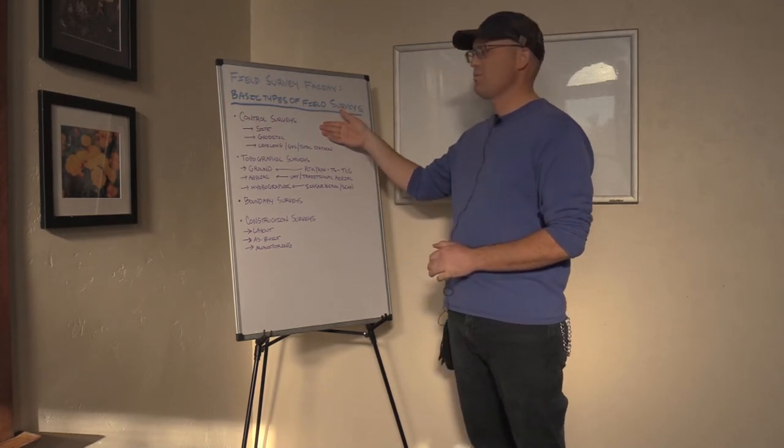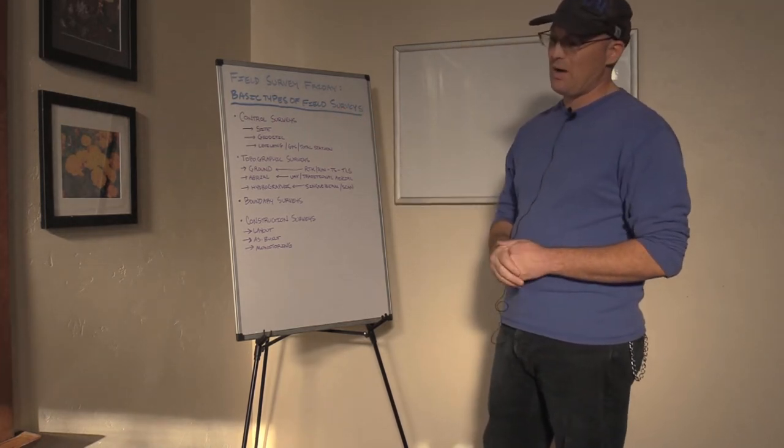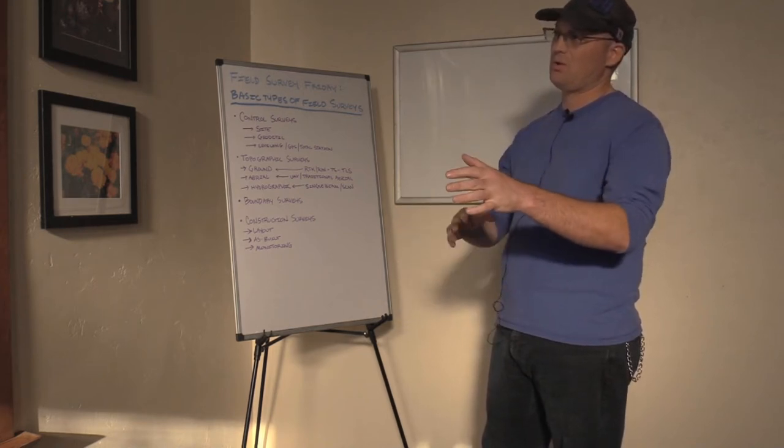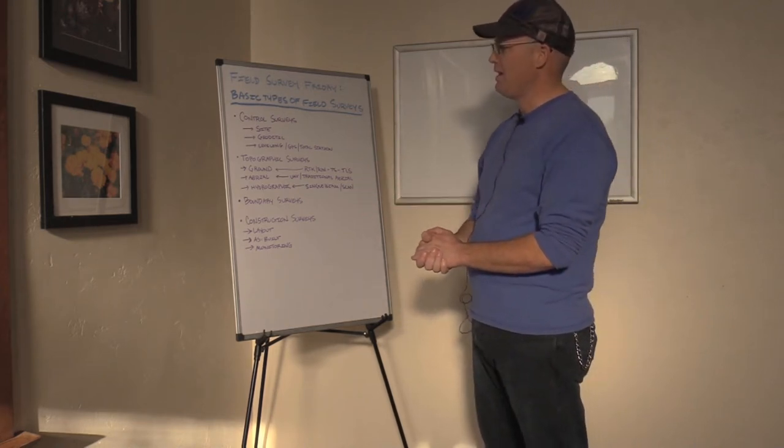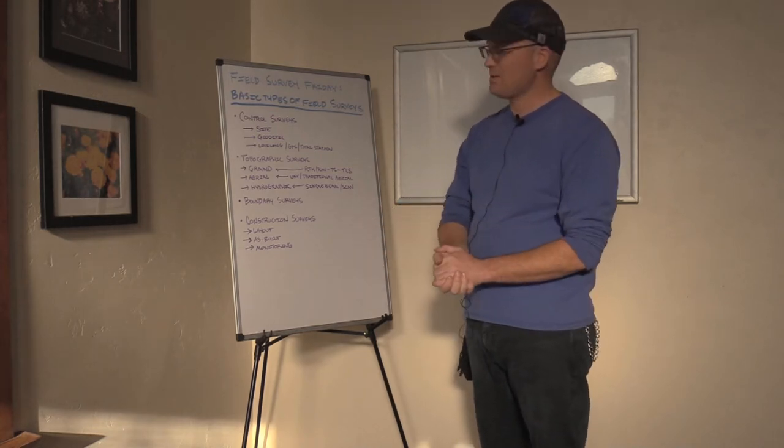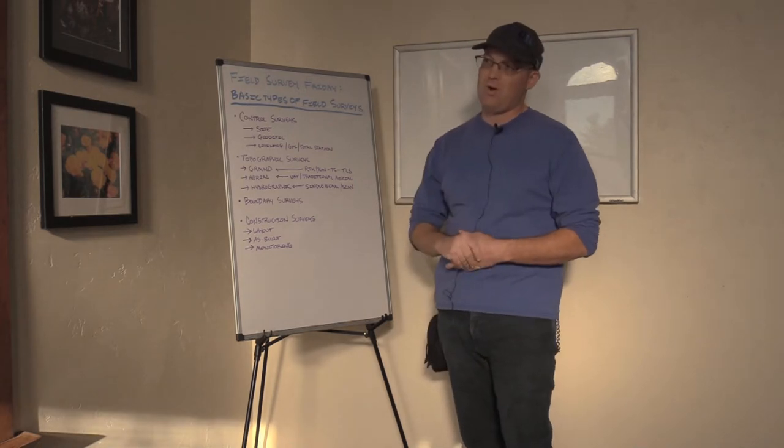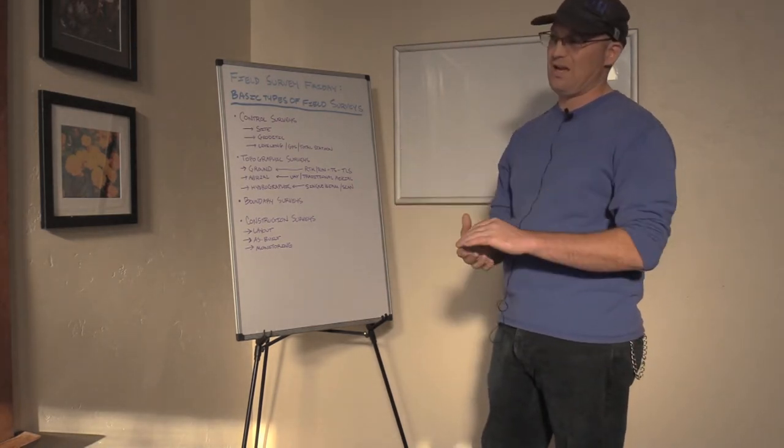First type of survey is what we call a control survey. That's where we're going to go out and establish really accurate coordinate values, horizontal and vertical, on a key set of monuments or control points. So I break those down a little bit further.